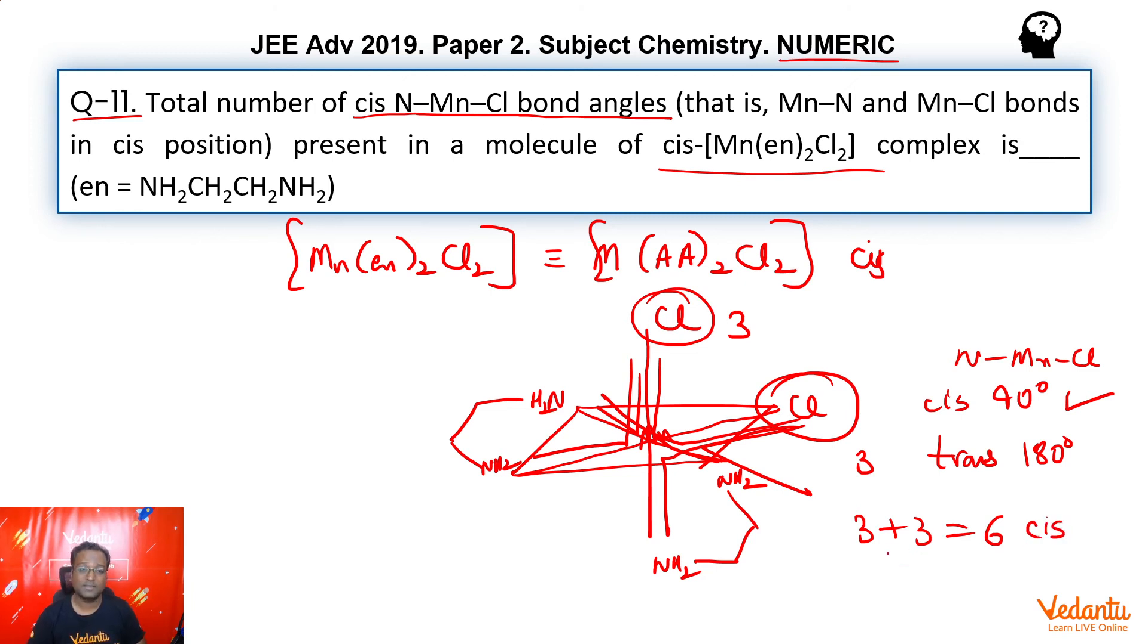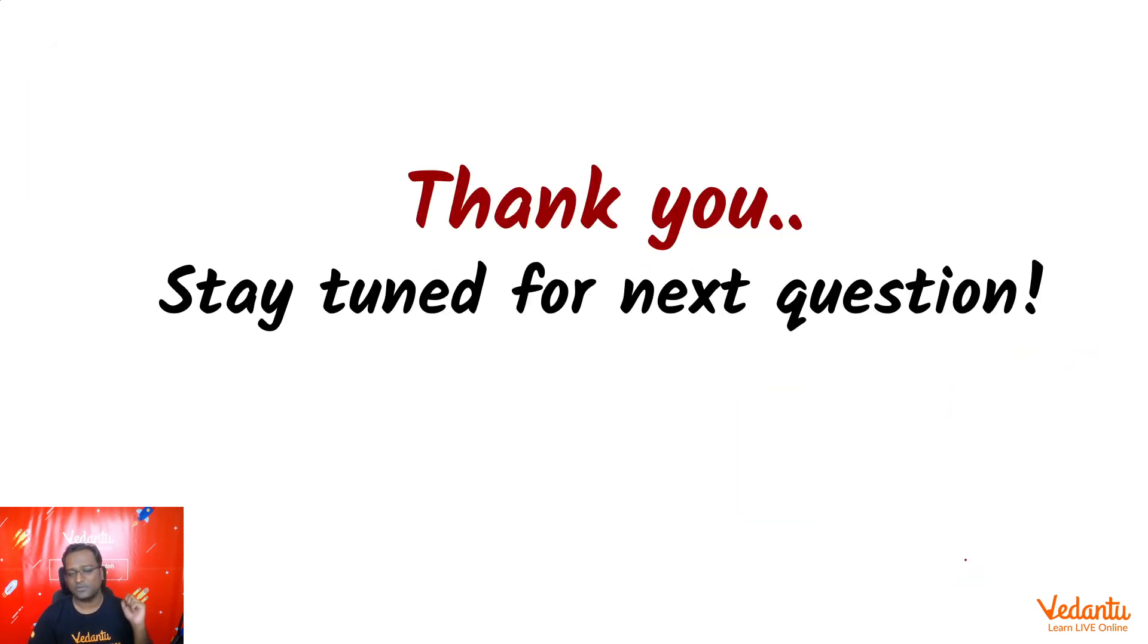Now, if we had to answer how many trans N-Mn-Cl bonds are present—trans means 180 degrees. Only one trans position to each Cl is possible. As you can see, Cl-Mn-NH2, Cl-Mn-NH2. So if it was trans, the answer would be 2. Thank you so much for joining us and stay tuned for our next question.